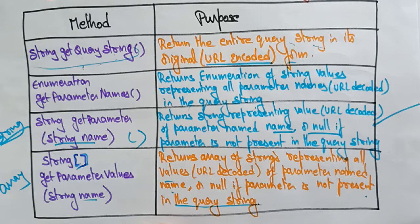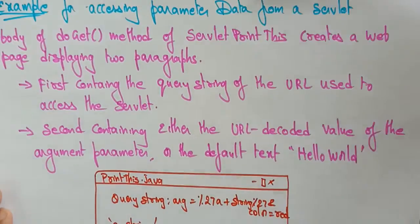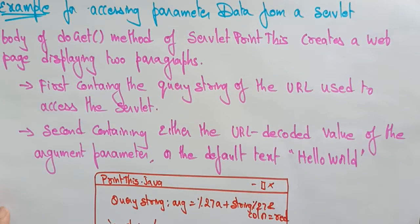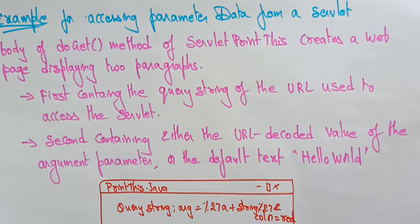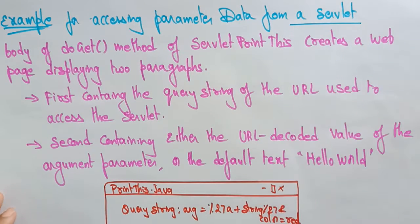These are the different HTTP servlet request methods for accessing the parameter data. Let's see an example of how this parameter data is accessed from a servlet.